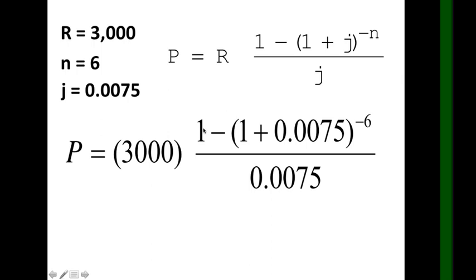Please type on your cell phone: 1 minus, open parenthesis, 1 plus 0.0075, close parenthesis, raised to negative 6. Click equals.